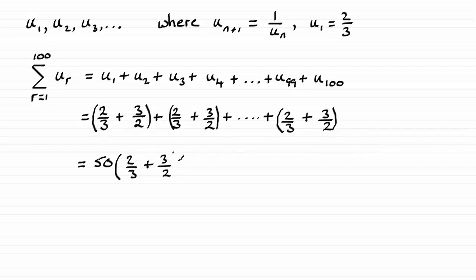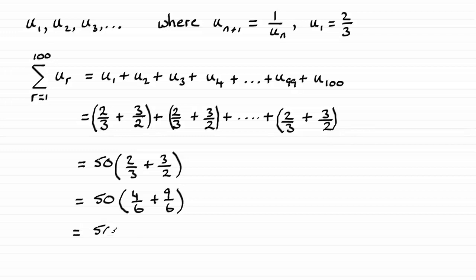Whether you do this on a calculator or in your head is up to you. Converting both fractions into sixths: two thirds is four sixths, and three over two is nine sixths. So we have 50 lots of thirteen over six, which gives the exact value of 325 over three. Hopefully you've been able to see your way through that one.